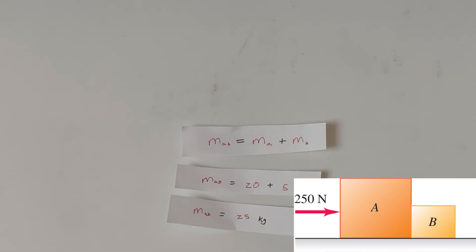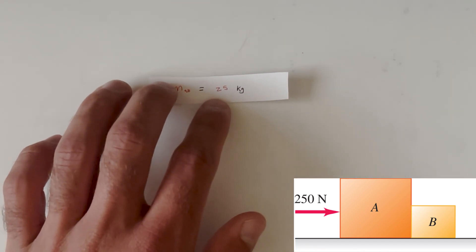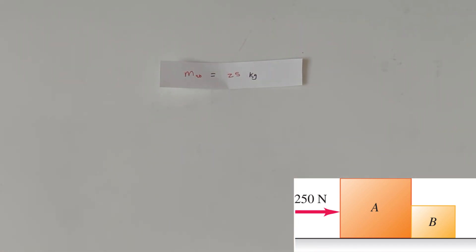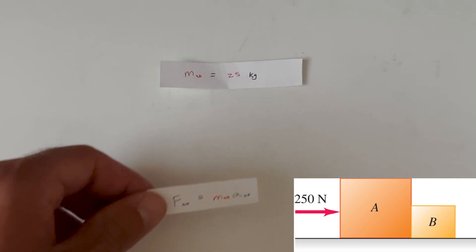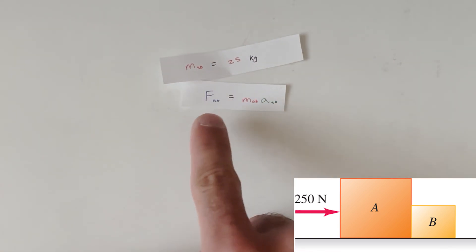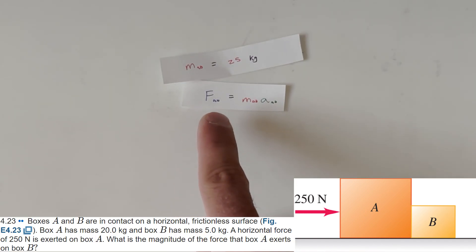So now that we have that piece of information, let's move on. So we're going to go to our next equation. Force is equal to mass times acceleration. This time, we're going to label it for A and B. Why are we doing this? Well, we know that the force, 250 newtons, is being applied to mass A and B, right? Because A and B are forming a system together, that force is being applied to both A and B.